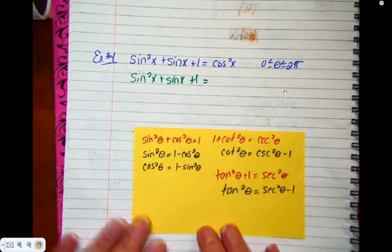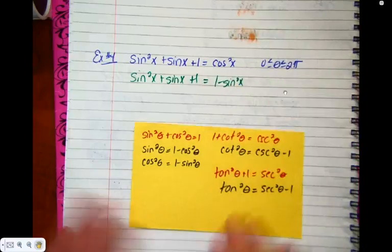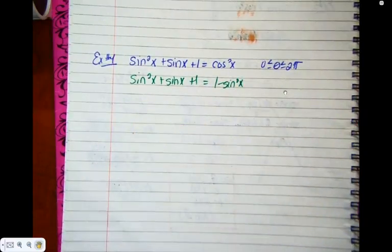On the right, the cos squared is coming out, the 1 minus sine squared is going in. Okay, thoughts?